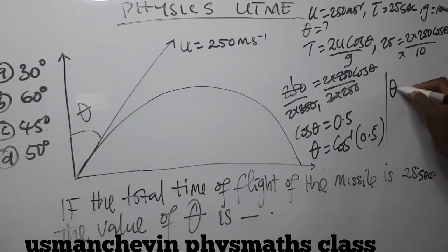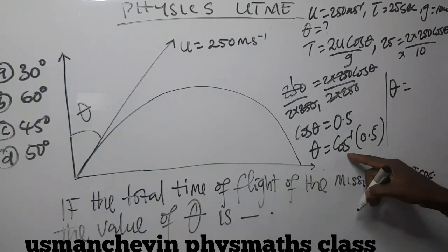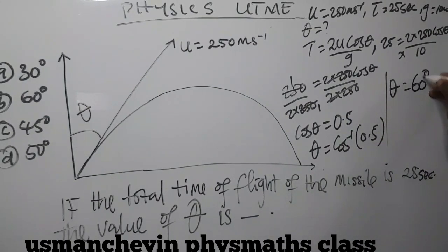And from there, our theta will now be equal to the cos inverse of 0.5 is 60 degree.